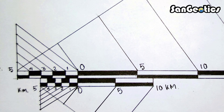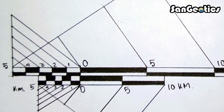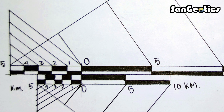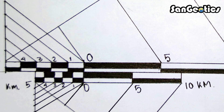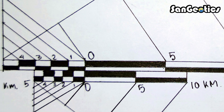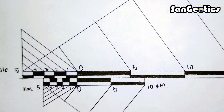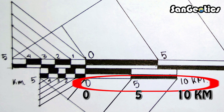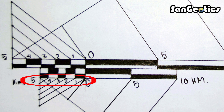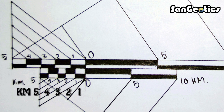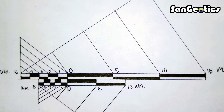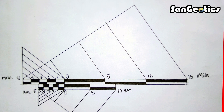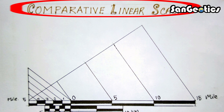Now mark the scale values of the second linear scale. Primary and secondary division distances are marked on the right and left respectively as 0, 5, 8 kilometers, and 1, 2, 3, 4, 5 kilometers. Finally, give a suitable heading: 'Comparative Linear Scale'.